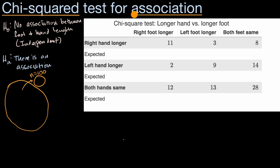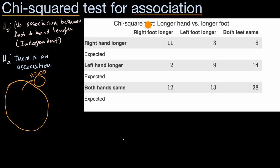In a chi-squared test for homogeneity, we sample from two different populations or look at two different groups, and we see whether the distribution of a certain variable amongst those groups is the same. Here we are just sampling from one group, but we're thinking about two different variables for that one group — foot length and hand length.